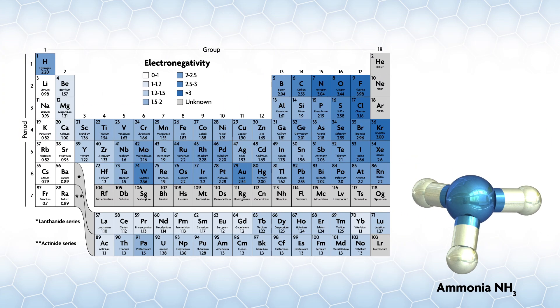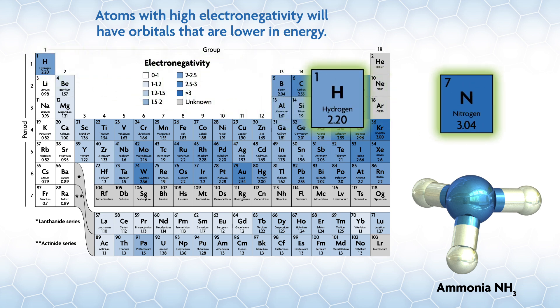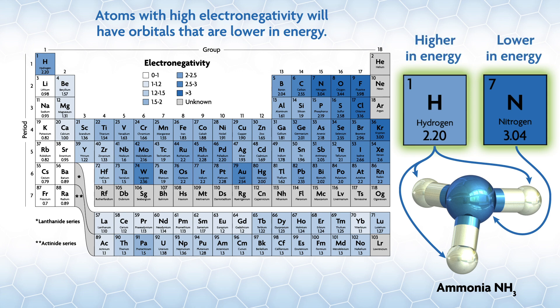Relative orbital energies, if you don't have any other information, can be estimated by the electronegativity of the atoms involved. Atoms with high electronegativity will have orbitals that are lower in energy. For ammonia, we will assume that the nitrogen orbitals will be lower in energy than the hydrogen orbitals because of nitrogen's higher electronegativity.